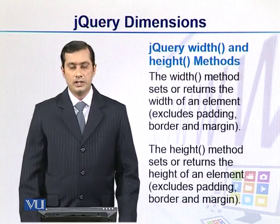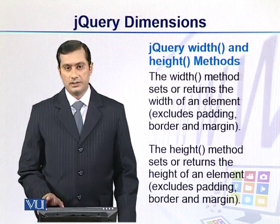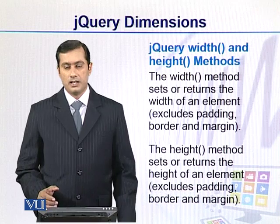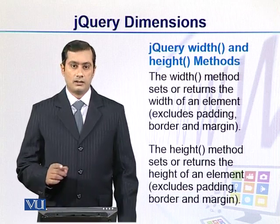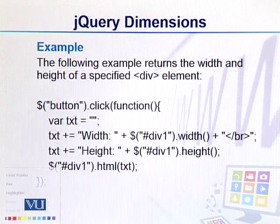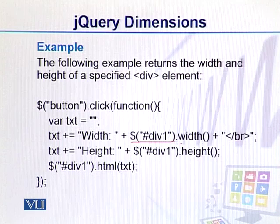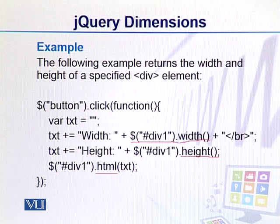jQuery width and height methods: we give a specific width with the width method and a specific height with the height method. If padding or any border size is included, that is handled separately. In an example, we use a button click function to get a specific element's width and height values easily.